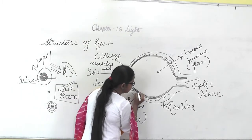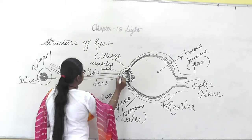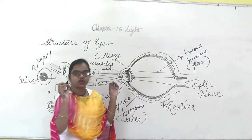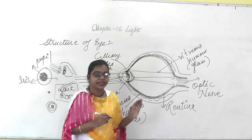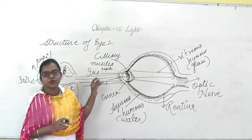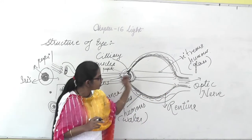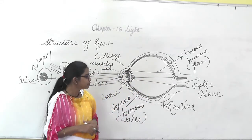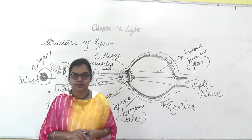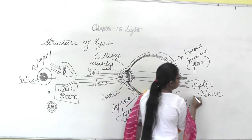The red-colored part at the back of the eye is known as the retina. When light rays fall on your eyes, they get reflected back to the retina. Through the retina, these signals are converted into electrical signals, which travel through the optic nerves to our brain.